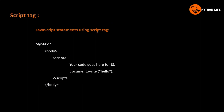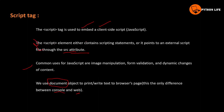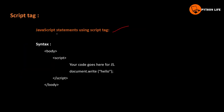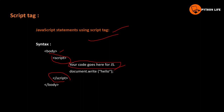Common uses for JavaScript are image manipulation, form validation, and dynamic changes of content. We use the document object to write text to the browser page. We have a console object but also a document object — these are different. JavaScript statements are placed using the script tag; statements can be inline or point to an external file via the src attribute.